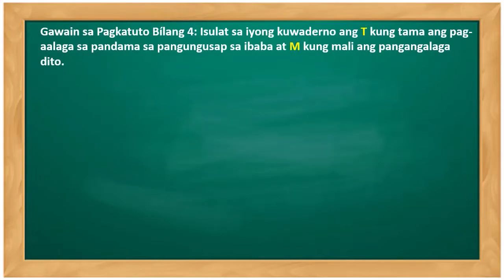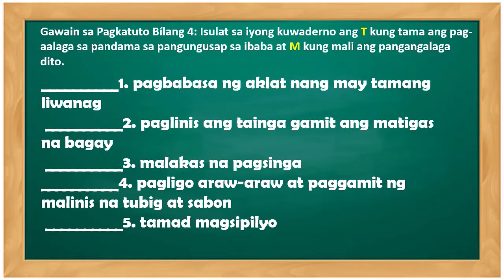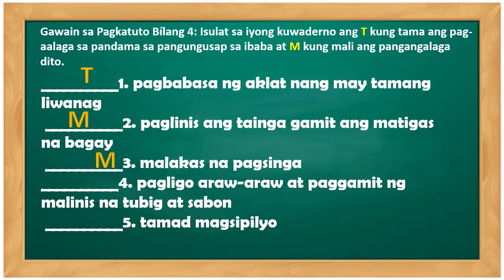Gawain bilang apat: isulat ang T kung tama ang pag-aalaga sa pandama at M kung mali. Number one: pagbabasa ng aklat ng may tamang liwanag — Tama. Number two: paglilinis ng tainga gamit ng matigas na bagay — Mali. Number three: malakas na pagsinga — Mali. Number four: pagligo araw-araw at paggamit ng malinis na tubig at sabon — Tama. Number five: tamad magsipilyo — Mali.